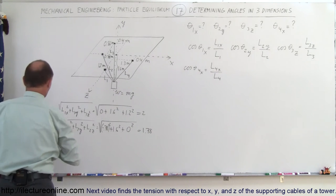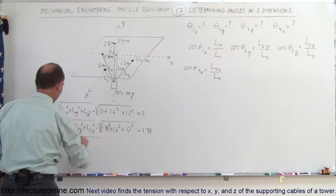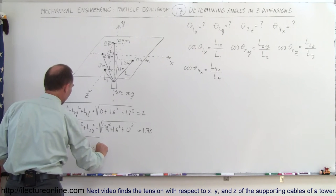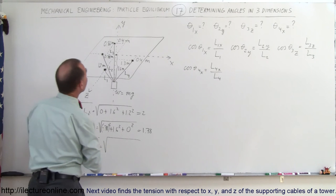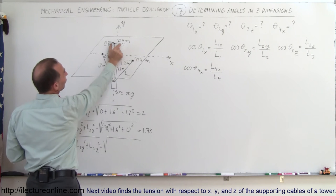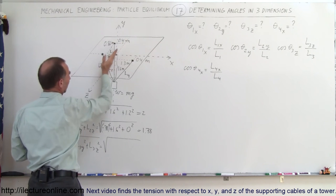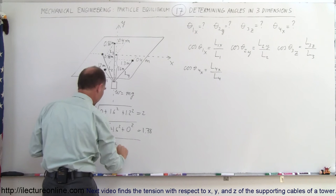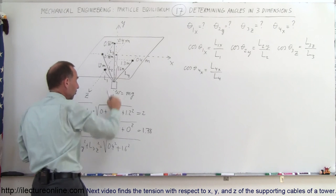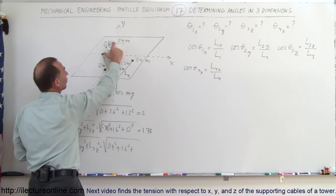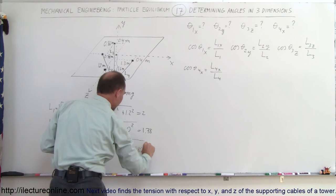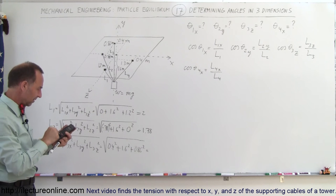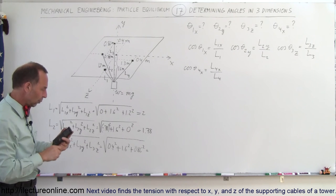For L3, the magnitude equals the square root of L3x squared plus L3y squared plus L3z squared. In the x-direction, it's 0.4 meters (negative, but we square it anyway), giving 0.4 squared. In the y-direction it's 1.6 squared, and in the z-direction it's 0.86 meters away from the origin. So the square root of 0.4 squared plus 1.6 squared plus 0.86 squared gives us 1.86 meters.